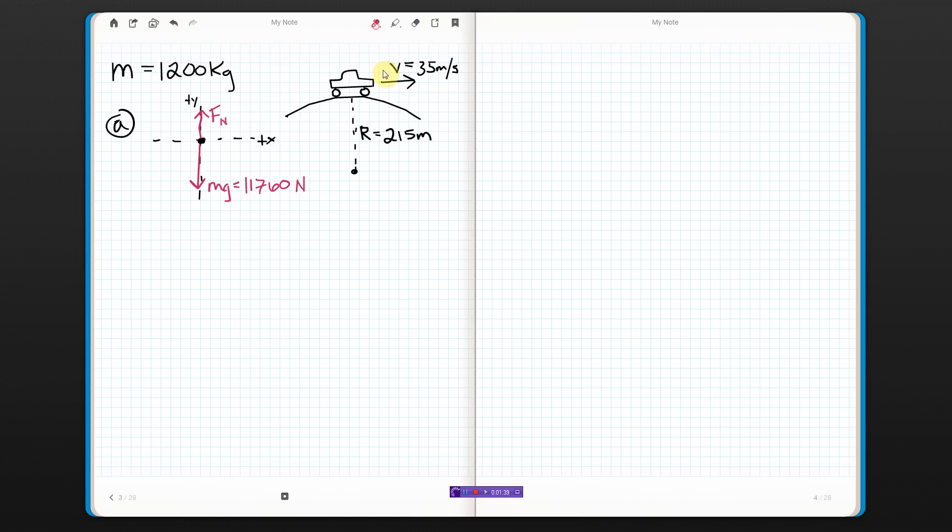If I do Newton's second law in the y direction: F_net_y equals ma_y. The net forces: we've got Fn force up and mg down, so it'd be Fn minus 11,760 equals mass of 1200 times a.